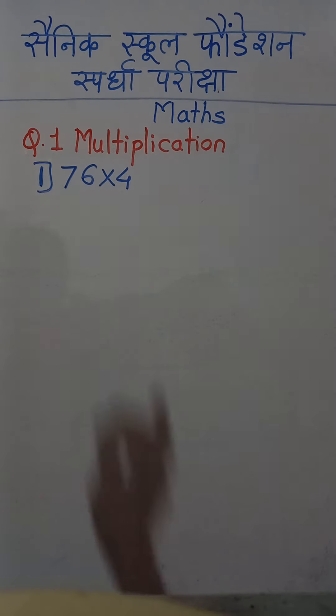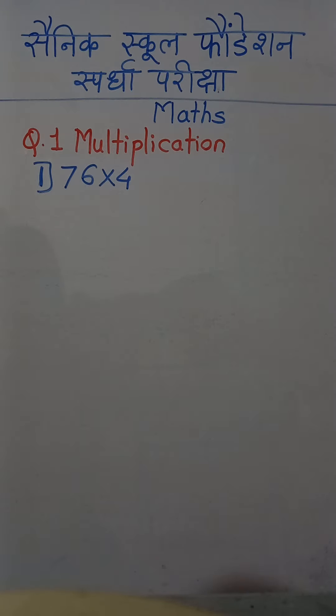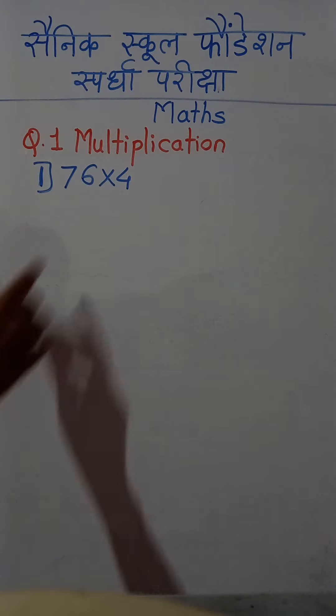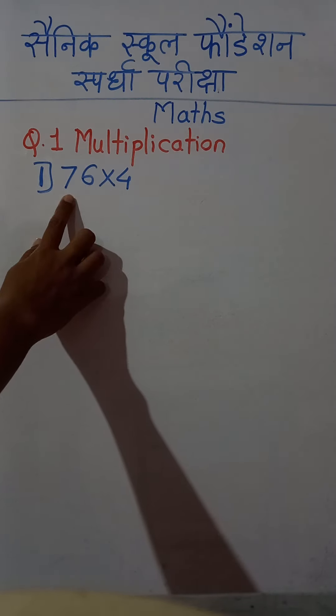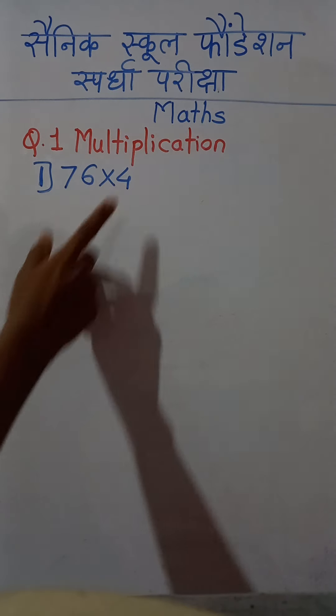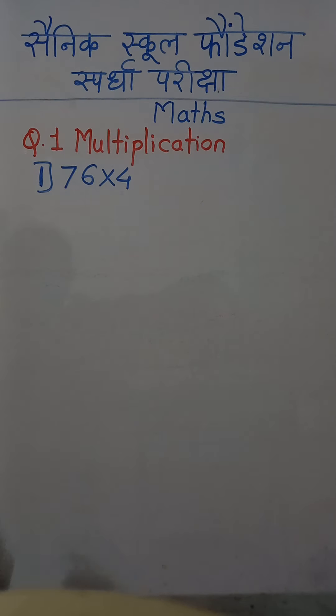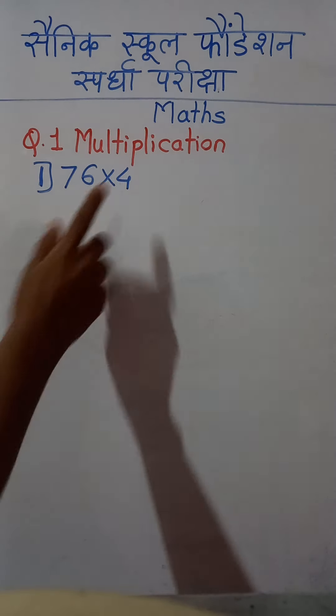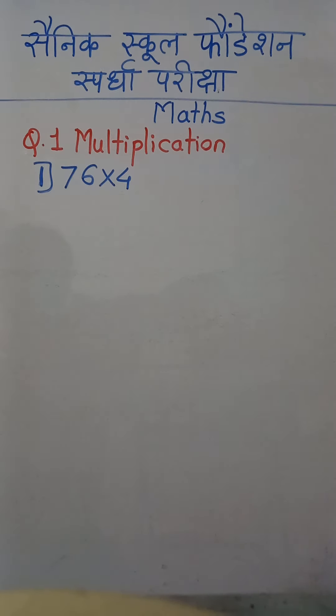Now we are going to learn multiplication of numbers. Here suppose we have given the example 76 multiplied by 4, that is a 2-digit number multiplied by a 1-digit number.